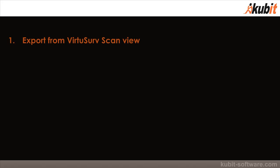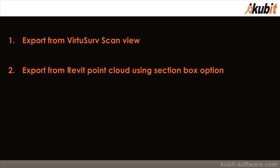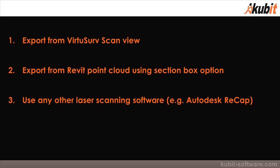Let's have a look at the options we have to bring point cloud regions into the family environment. First, we can export from the VirtuSurv surface scan view. It is also possible to export directly from a Revit point cloud region using the 3D section box option. Of course, it's also possible to use any other laser scanning software — for example, Autodesk ReCap — to export a point cloud region as a PTS file and import it into the family environment.